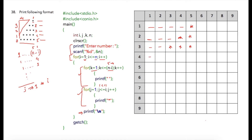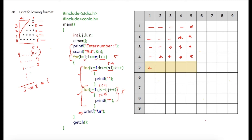Similarly, in the next iteration of i, 2 spaces are printed then 3 stars; then 1 space and 4 stars. In the final iteration where i becomes 5, the space for loop will not execute because the condition is 5 minus 5 which is 0 — since k is initialized to 1, k cannot be greater than 0. So no space is printed; however the star for loop executes 5 times because i is now 5, and the condition 1 less than or equal to 5 is met, so 5 stars are printed.